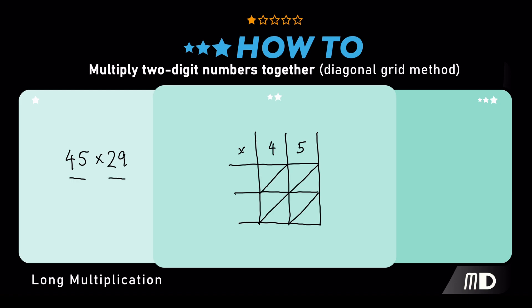Likewise, the 29 splits into a 2 and a 9, with the 2 going at the beginning of the first row, and the 9 at the beginning of the second row.